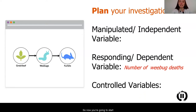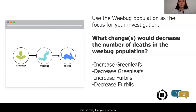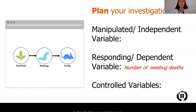Now you're going to start planning your investigation. You are going to have to pick what your manipulated variable is — you may also have heard this called the independent variable. This is the thing that you are going to change. It is the thing that you suspect is going to affect the number of deaths in the WeBug population. Which one did you pick? That is your manipulated variable. Our responding, or dependent variable, is going to be the number of WeBug deaths — this is the thing we are going to measure.